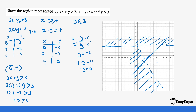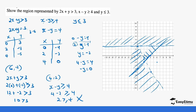We can extend the line and get more points. Let's test a value above the line — for example (4, 2): x minus y is greater than or equal to 4 becomes 4 minus 2, which is 2. Is 2 greater than or equal to 4? That is not true. So values above are unwanted, and we want the region below this line. That's how you represent your intersecting regions.